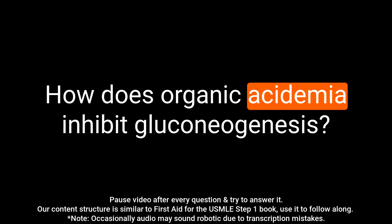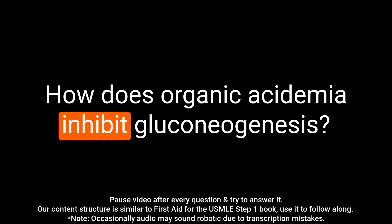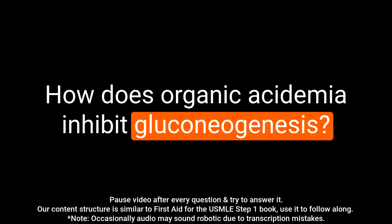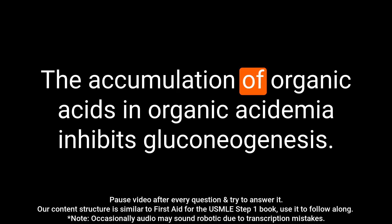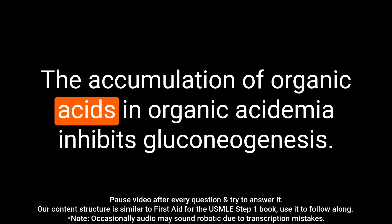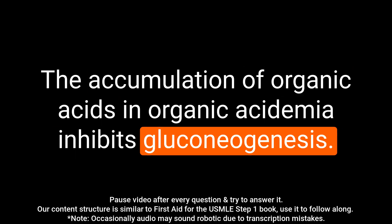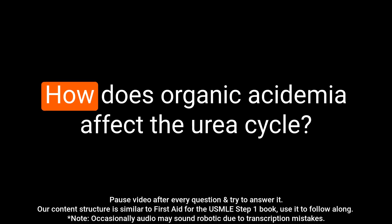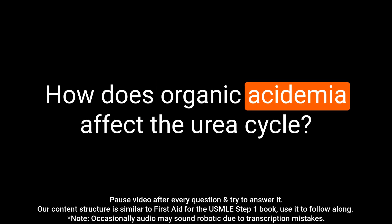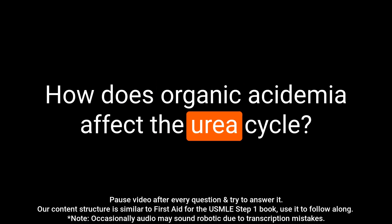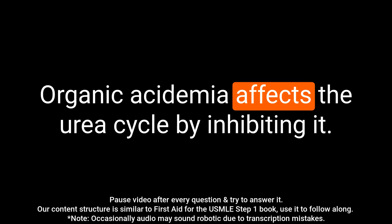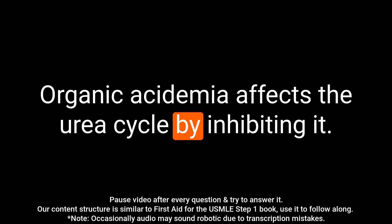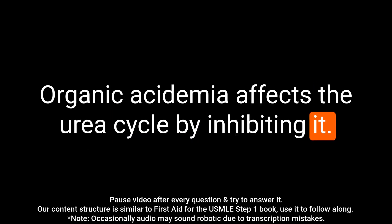Question: How does organic acidemia inhibit gluconeogenesis? Answer: The accumulation of organic acids in organic acidemia inhibits gluconeogenesis. Question: How does organic acidemia affect the urea cycle? Answer: Organic acidemia affects the urea cycle by inhibiting it.